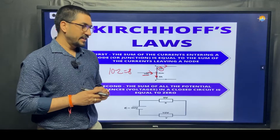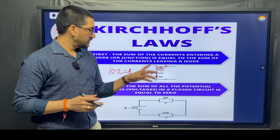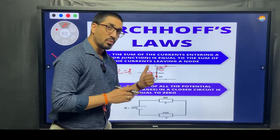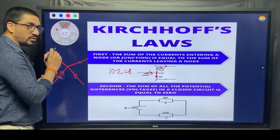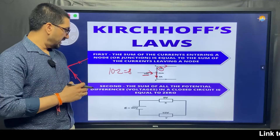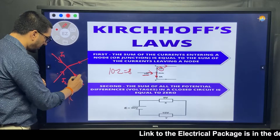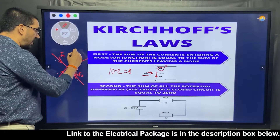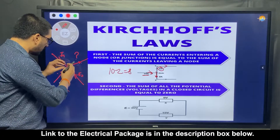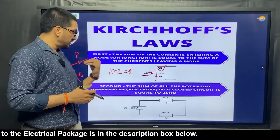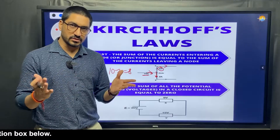You can easily calculate an unknown current if you know all but one value. If there are four wires, you must know three values to calculate the fourth. For example, if the currents are I1, I2, and I3 converging at a node, then the outgoing current is simply I1 plus I2 plus I3, which is the summation of all three.